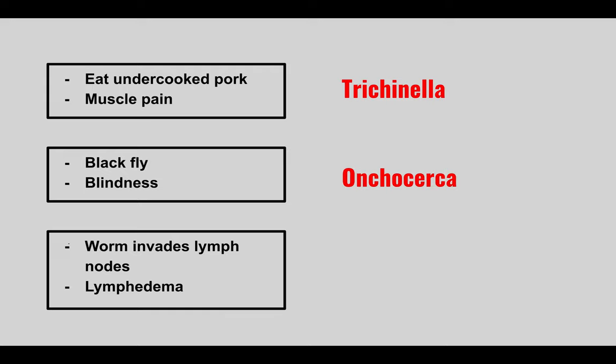This is Onchocerca, which causes river blindness — look out for blindness caused by the black fly. The next patient has a worm invading the lymph nodes and we see lymphedema. This is Wuchereria and Brugia — sometimes they show a picture of someone with really swollen legs representing the lymphedema.